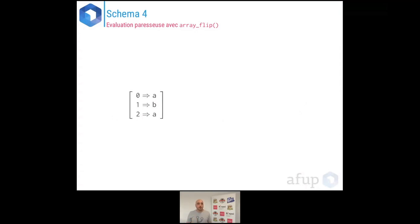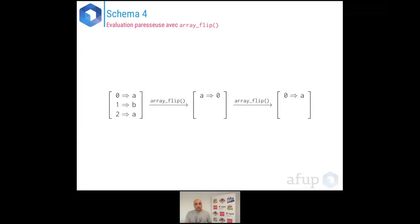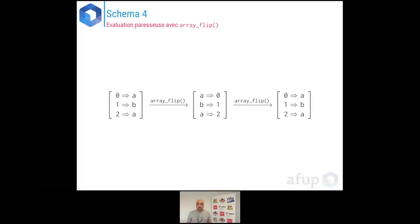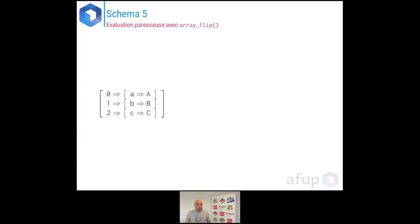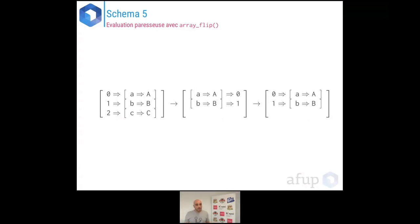Avec deux fois la lettre A en données d'entrée et un premier lazy array_flip : il s'occupe de A et de 0, le retourne à nouveau, passe au suivant — et ça fonctionne. Le fait d'utiliser un lazy array_flip permet d'avoir des clés qui ne sont plus uniques. En utilisant des évaluations paresseuses, on se passe des contraintes sur les clés des tableaux. Même pour un tableau de tableaux avec deux lazy array_flips, on n'a pas d'erreur — on peut même avoir des clés sous forme d'objets ou de booléens — et on retrouve bien le tableau d'origine.